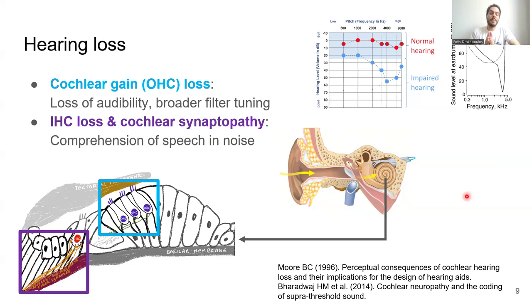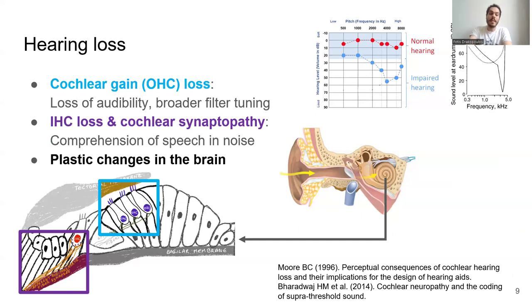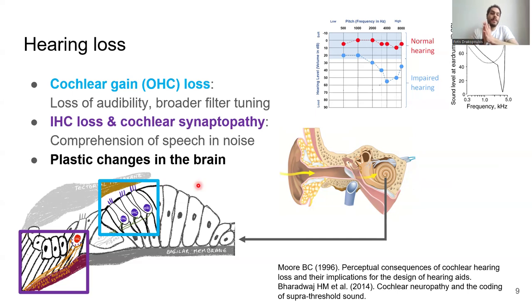Another part of hearing loss that has been recently studied and hypothesized to be linked with difficulties in understanding speech in noise and in everyday listening conditions is the loss of inner hair cells and also the damage to the synapses — the auditory nerve synapses — the so-called cochlear synaptopathy. The effects of this are not still well known. We should also note that there are changes in the plasticity of the brain after cochlear damage, such as central gain, which can also affect how our perception of sound is distorted after aging or noise exposure.